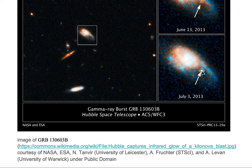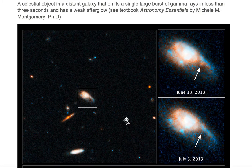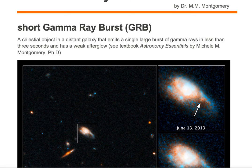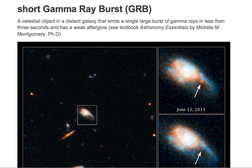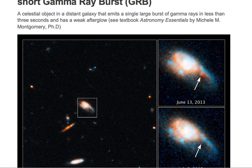Here we're looking at GRB 130603b as viewed from the Hubble Space Telescope. As you can see, we're looking at a distant galaxy. We had a gamma-ray burst that lasted less than three seconds, and you can see the afterglow in this red circled region.